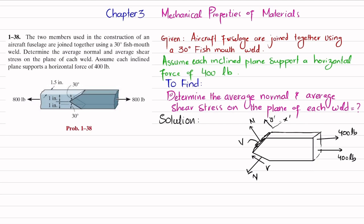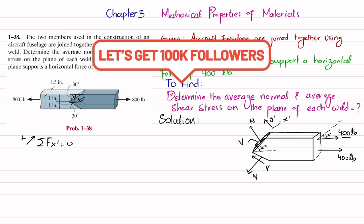We will apply the equation of equilibrium: the sum of all forces along the x-dash direction must equal zero, with force in this direction taken as positive. The weld makes an angle of 30 degrees, and by alternate angles this is also 30 degrees along the horizontal line. Drawing a line parallel to the face, this angle is also 30 degrees. The 400-pound force will have two components: one along the x-dash direction and one opposite to the y-dash direction.